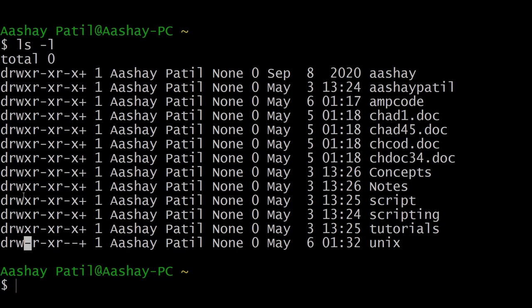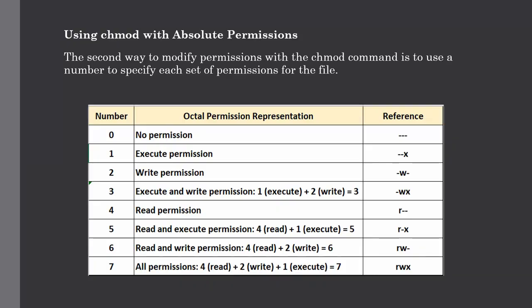The second technique is to change permission using the chmod command with absolute permissions. The second way to modify permissions is to use a number to specify each set of permissions for a file. Each permission is assigned a value as given in the following table, and the total of each set of permissions provides a number for that set.